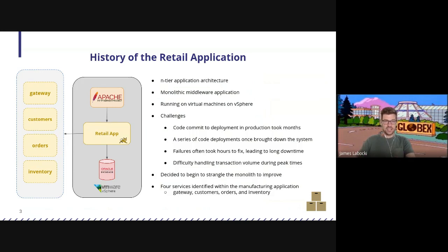This retail application is a typical N-tier application. It started in the mid-2000s. It's a monolith. It runs on VMs today on VMware vSphere. We've got a number of challenges with this. Our code commits take a very long time. We had a code deployment that brought down the entire system once. When things fail, it often takes us hours to fix them, leading to long downtime. During peak times, we have trouble handling transaction volume. So if you're familiar with the DevOps metrics, we're failing in all of them with this application.